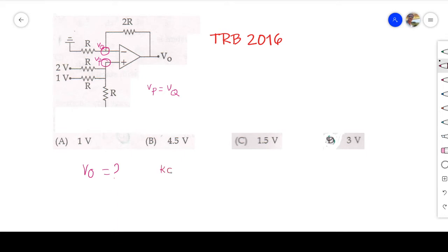Apply KCL for this one. What is the voltage here? V_P here also V_P. So I apply KCL: 2 minus V_P by R plus 1 minus V_P by R. Incoming current is equal to outgoing, that is equal to V_P by R. Incoming is equal to outgoing.